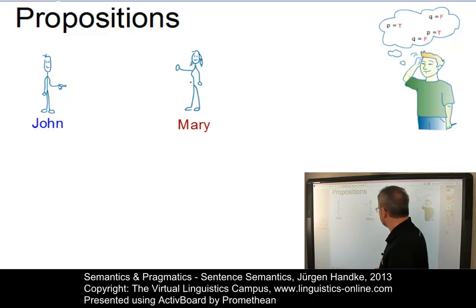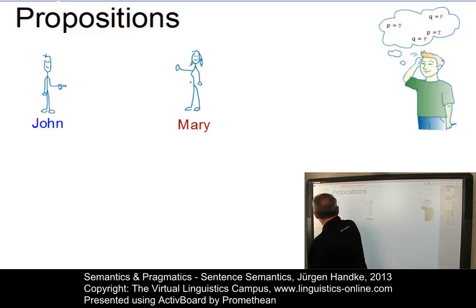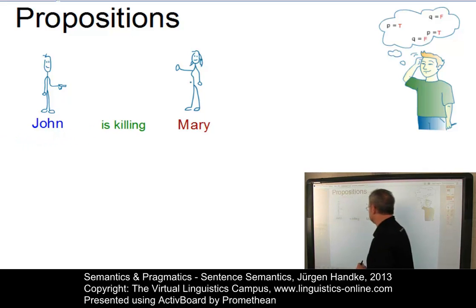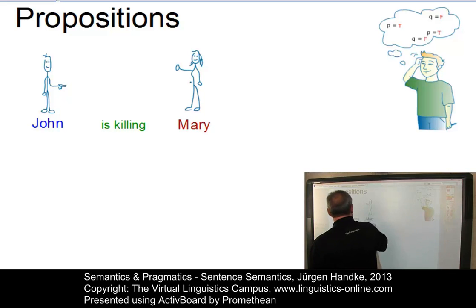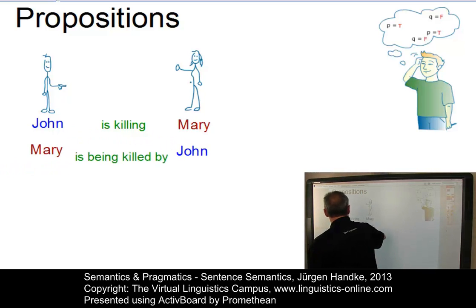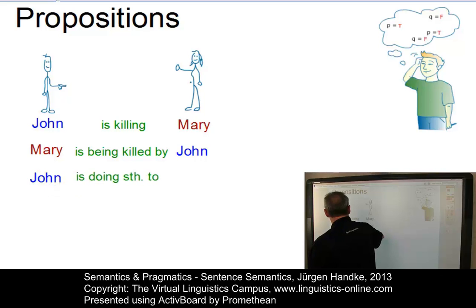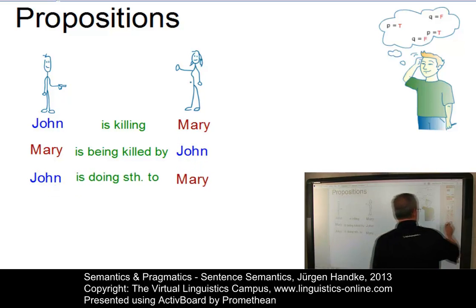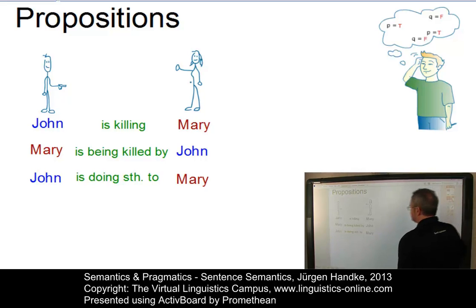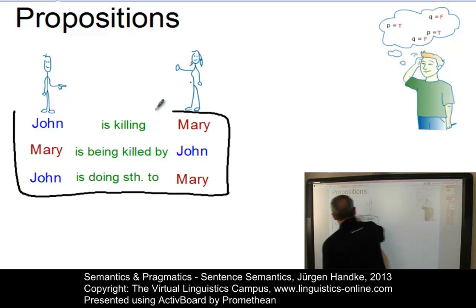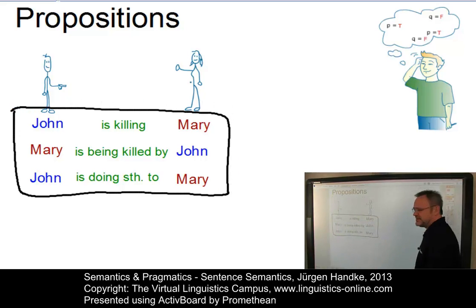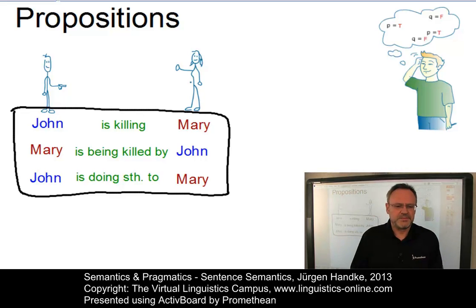Here are John and Mary, and obviously John is pointing a gun at Mary. So, one sentence that could be derived from this situation is that John is killing Mary. Another one could be that Mary is being killed by John. A further sentence could be John is doing something to Mary, and so on and so forth. However, in looking at these sentences in terms of their meaning, they essentially mean the same thing, and this meaning is defined in terms of so-called propositions.